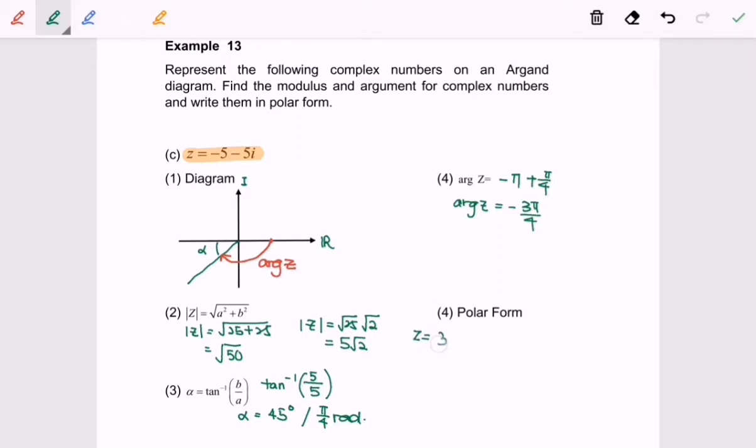Finally, z is equal to 5 square root of 2 bracket cos of the argument, which is negative 3 pi over 4, plus i sine of the argument, negative 3 pi over 4. So here we are, and thanks for watching.